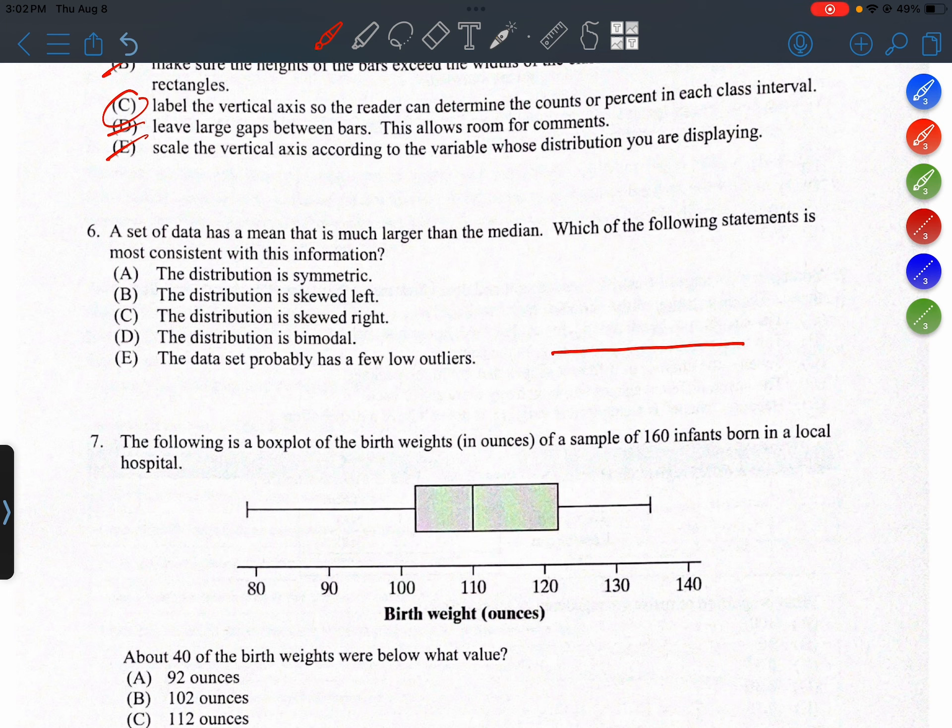So what type of graph has extreme values on the high side? Well, here's a graph that's symmetric, so it has roughly the same number of low values as high values.